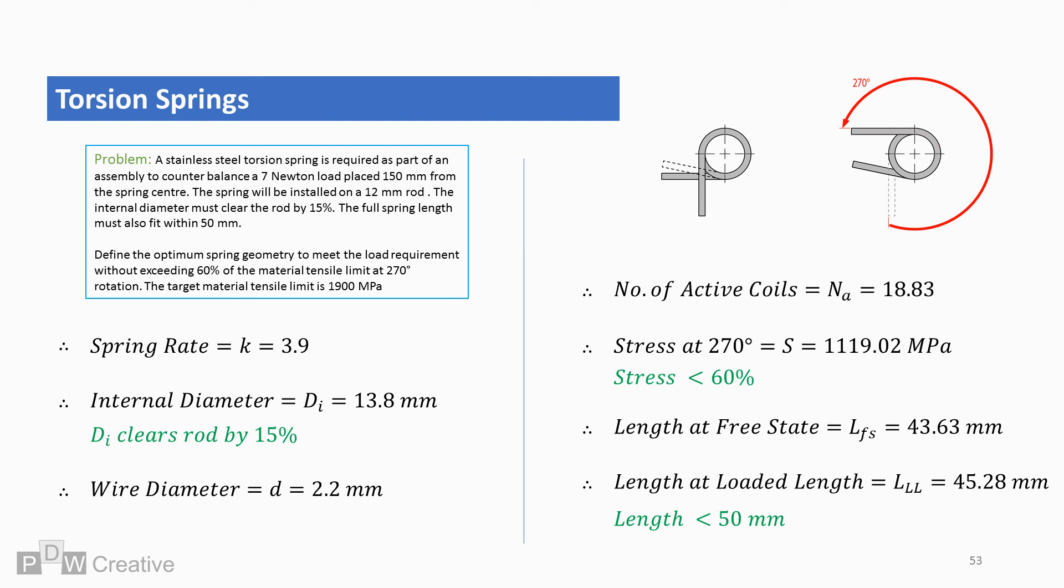Just to finish, let's take a look at what we have. In answer to the problem, the optimal geometry to counterbalance the 7 newton load at 150 millimetres from the centre is as follows. The spring rate is 3.9 newton millimetres. The internal coil diameter of 13.8 clears the 12 millimetre rod by 15%. The wire diameter will be 2.2 millimetres. The spring will have 18.83 coils. The stress at 270 degrees will be 1119.02 megapascals. The free length will be 43.623 millimetres and the loaded length is 45.28. Both lengths are under the 50 millimetre target.